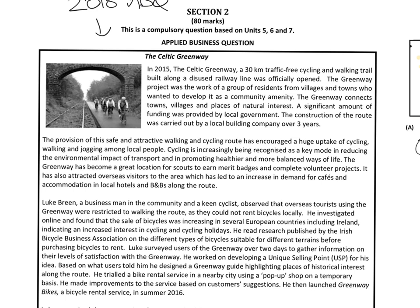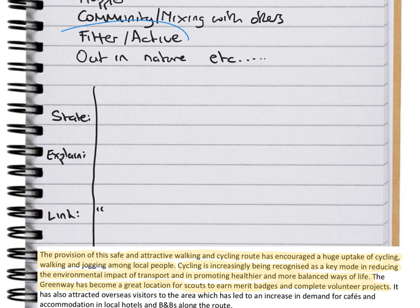Normally in the ABQ there are three or four paragraphs. Sometimes there's an introduction, and then each paragraph will kind of have the links for most of the points you're given. You can see here in paragraph two I've highlighted a couple of different links to do with social benefits. The first line says: 'Provision of a safe and attractive walking cycling route has encouraged a huge uptake of cycling, walking, and jogging among local people.' The next one talks about reducing environmental impact, balancing ways of life, and scouts and volunteering.